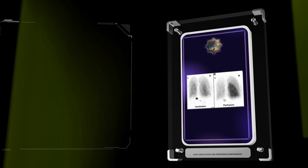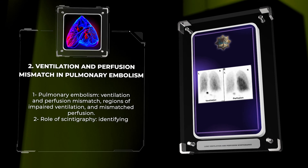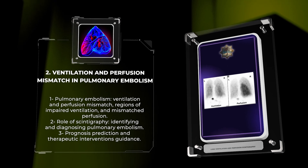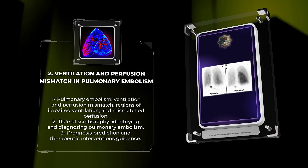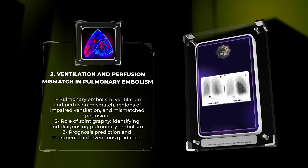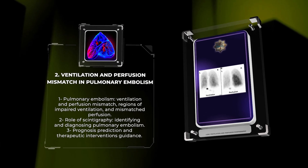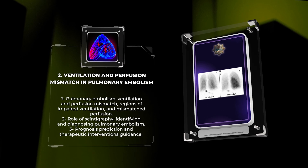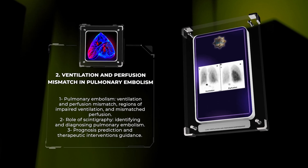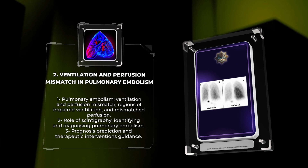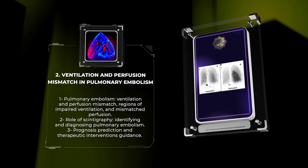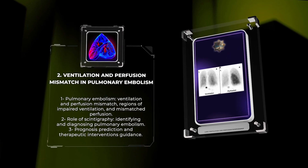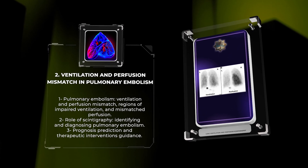Pulmonary embolism, a potentially life-threatening condition, often presents with ventilation and perfusion mismatch within the lungs. Scintigraphy plays a vital role in identifying these mismatched areas, demonstrating regions of impaired ventilation and mismatched perfusion in relation to the embolized regions. This non-invasive imaging modality not only aids in the accurate diagnosis of pulmonary embolism but also helps in predicting the patient's prognosis and guiding therapeutic interventions.